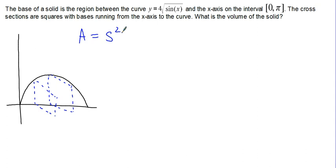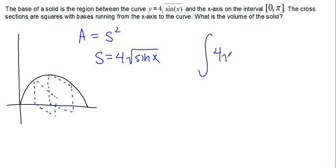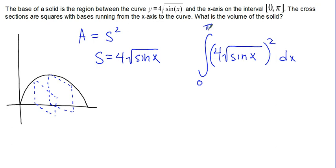The side of each of our squares is equal to whatever Y coordinate we have along our function, and our Y value is 4 root sine X. So we are going to integrate (4 root sine X) squared DX. Our limits of integration in this case are given to us — we're going to integrate from 0 to pi. The first thing we'll do is square our 4 root sine X, which gives us 16 sine X.